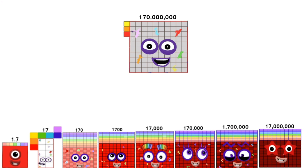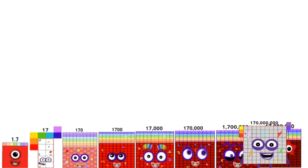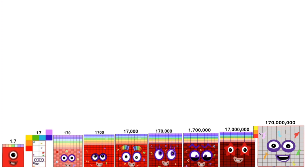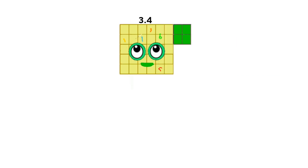Stage 2. Number Blocks 1.7 times number blocks 2 to 20,000,000. 1.7 times 2 times 1 equals 3.4.